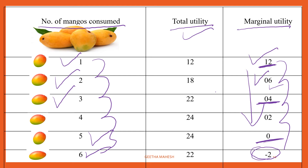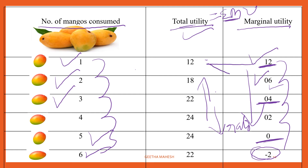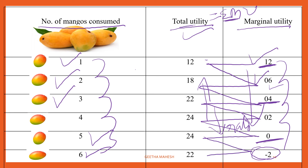Now look at total utility — it is increasing, but increasing at a diminishing rate, because total utility is the summation of marginal utility. As consumption increases, total utility rises, but each addition is smaller: 12, 12 plus 6 is 18, 18 plus 4 is 22, 22 plus 2 is 24, 24 plus 0 is 24, 24 minus 2 is 22. Each time what you are adding is diminishing, that is why total utility increases at a decreasing or diminishing rate.